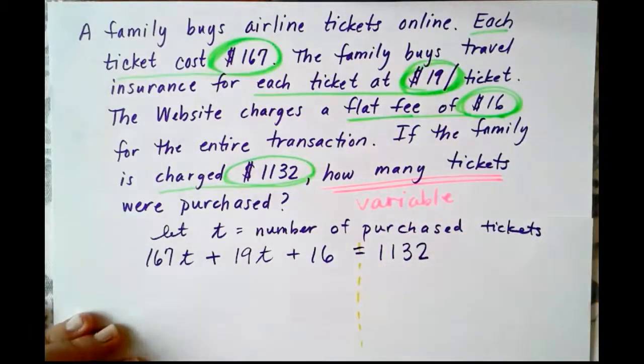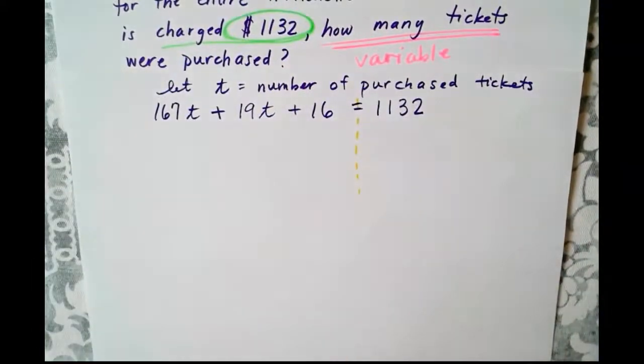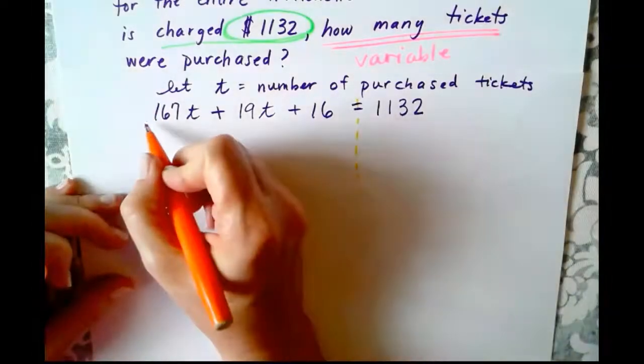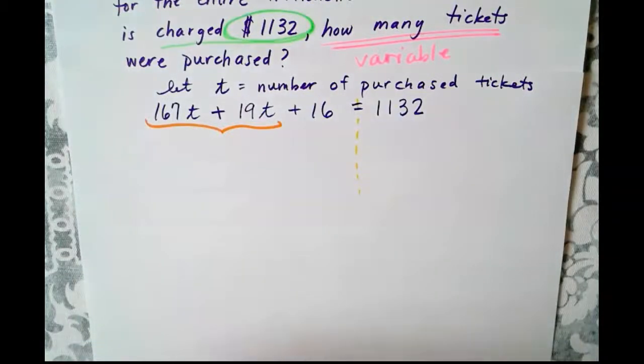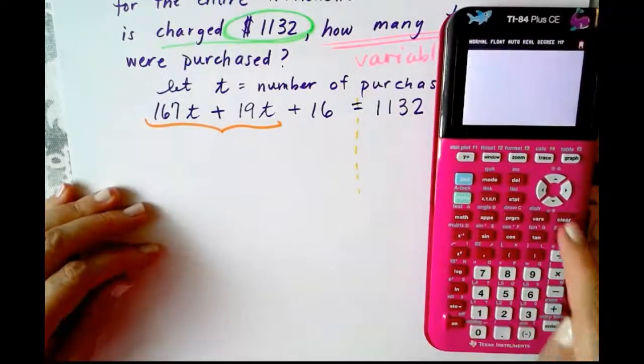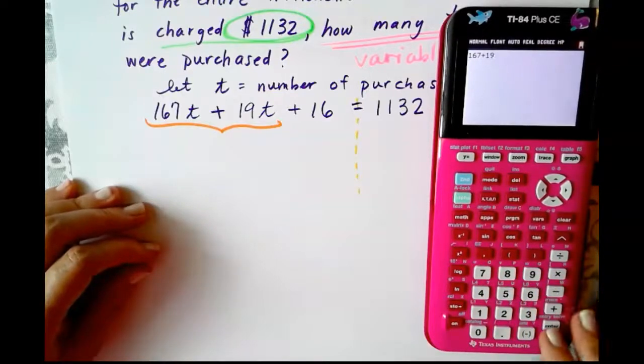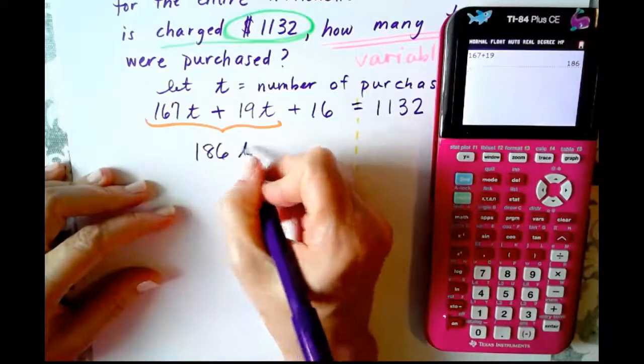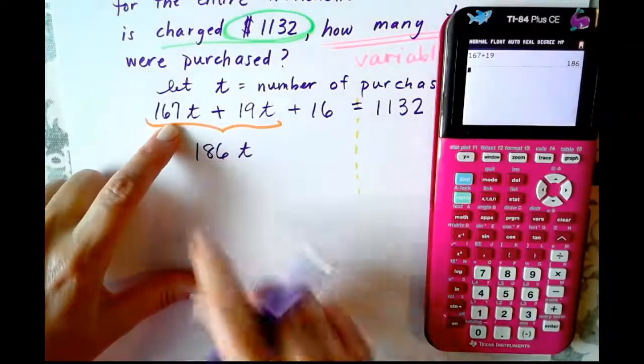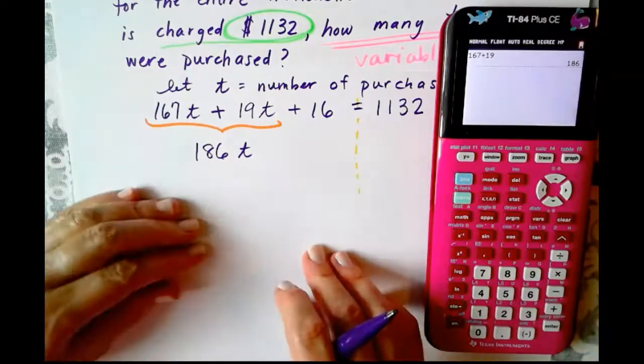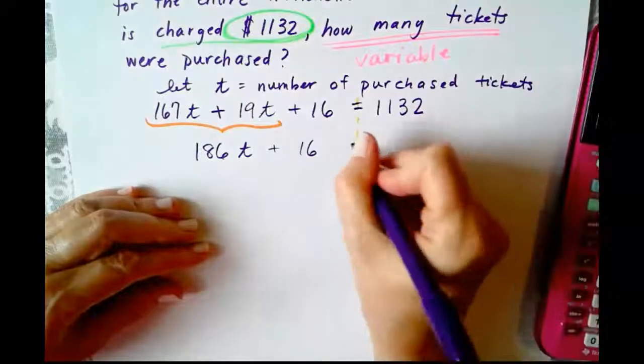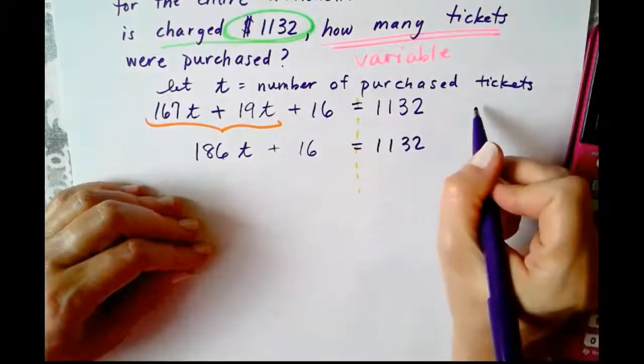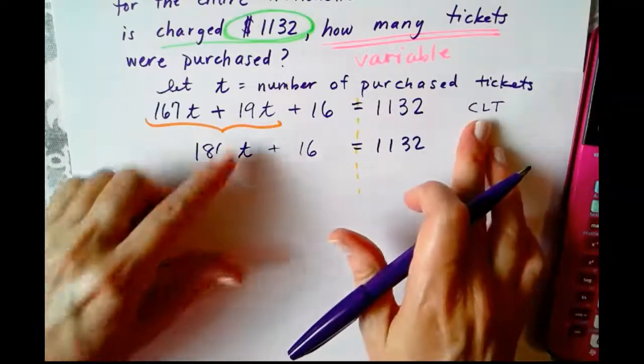So from here, this becomes an equation that needs to be solved. I am going to draw a line down my equation, and I'm going to start solving. So the first thing I need to do is I need to combine my terms because we've got 167T plus 19T. And with numbers that are slightly larger than normal, it's not a bad idea to go to your calculator to avoid a careless mistake. So 167 plus 19 is 186T, which makes sense because 167 plus 20 would be 187, so it's one less, 186.